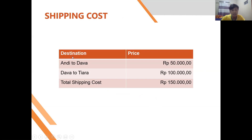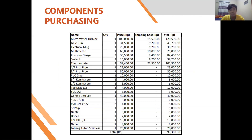For the shipping cost, the distance from Andy to Dafa is priced at 50,000 rupiah, and from Dafa to Chair is about 100,000 rupiah, giving a total shipping cost of 150,000 rupiah. Here are the components we purchased, with a total cost of approximately 699,300 rupiah.